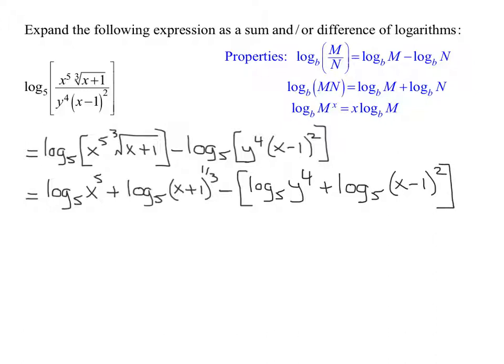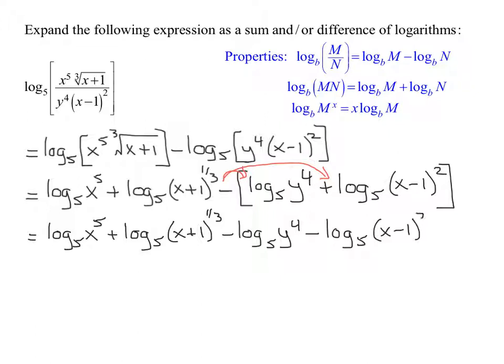And now what I have to do is I have to distribute in that negative into the last two terms. So my first two terms are going to stay the same. Log to the base 5 of x to the 5th, plus log to the base 5 of x plus 1 to the 1/3rd power, minus log to the base 5 of y to the 4th, minus log to the base 5 of x minus 1 all squared.